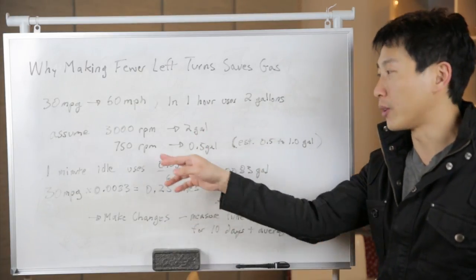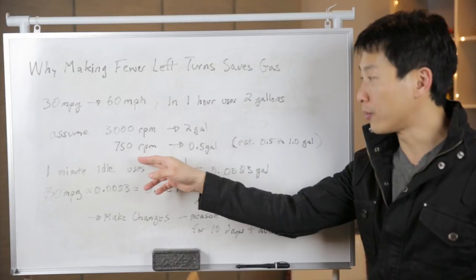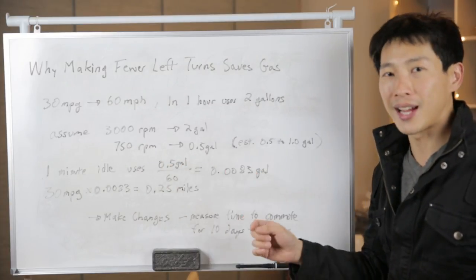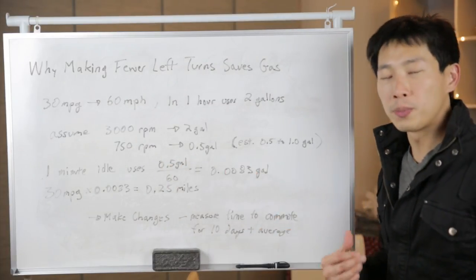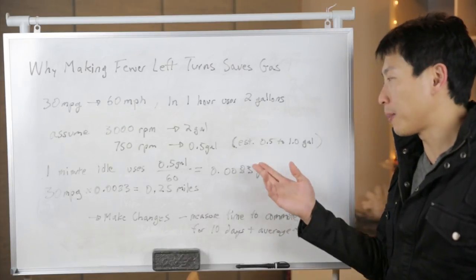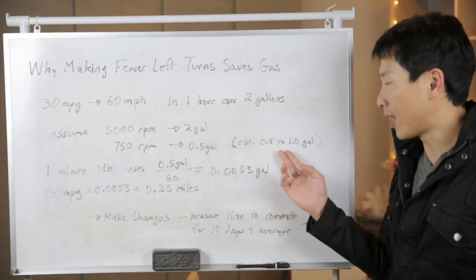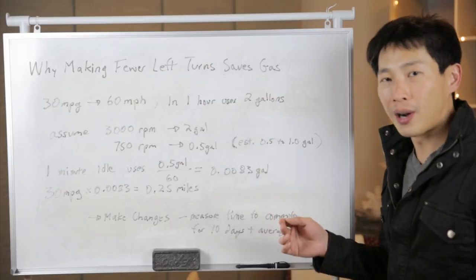Now, if we extrapolate this to an idling RPM of 750, it's going to consume about 0.5 gallons per hour. This is a super rough calculation and you can see online that people do estimate about 0.5 to 1 gallon per hour of idling.